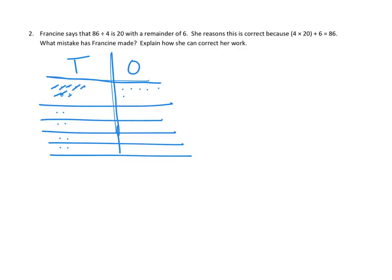Let's start working on the ones here. We can take 4 of the ones and drop 1 into each of the 4 groups. So let me cross those out — 1, 2, 3, 4. The ones are removed. And it looks like we have 2 ones that are left over as a remainder. Let's look at one of our groups to see what our quotient is going to be. In each of our groups, we have 2 tens and 1 one, or 21. So it looks like our quotient is 21.